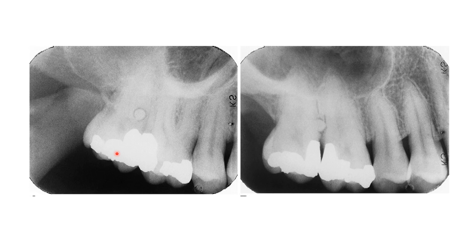To recap: we take the original radiograph in question, then take another radiograph changing the horizontal angulation. If the lesion moves distally when we move distally, it is palatal or lingual — Same Lingual. If it moves against our movement, it is located on the buccal surface — Opposite Buccal. Thank you very much.